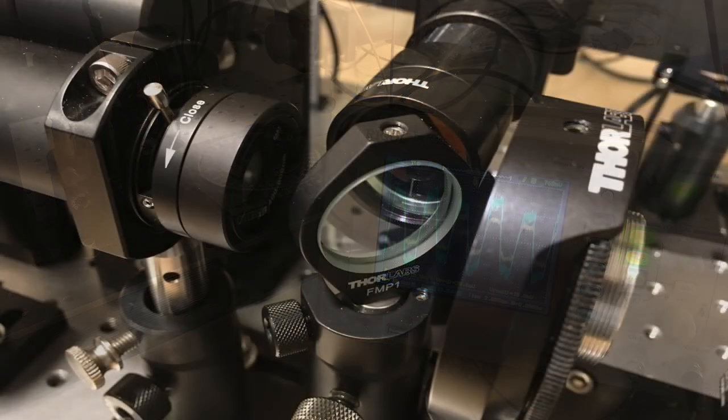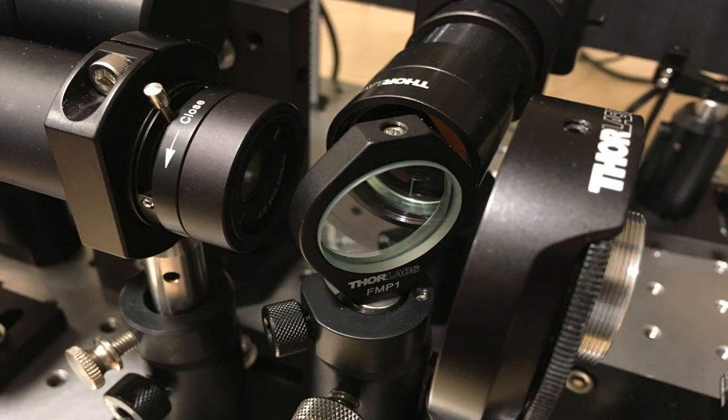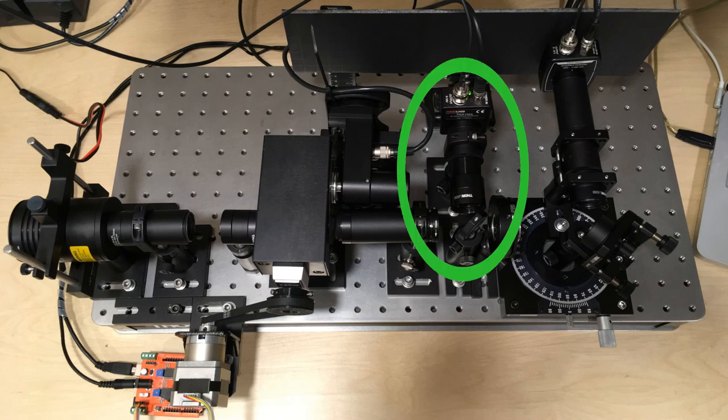Following the half-wave plate, a 50-50 beam splitter divides the input beam into signal and reference beams. The reference beam is used to monitor illumination of the test sample and compensate for potential time variations.